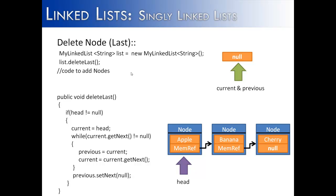Now we're going to add the code to add three nodes. We've shown how to do that in previous videos, so we just added a comment to say we're adding nodes. Notice that we have a three-node linked list with head starting at the first node. We're going to try to remove the last node from this linked list by calling the method deleteLast and entering the code.